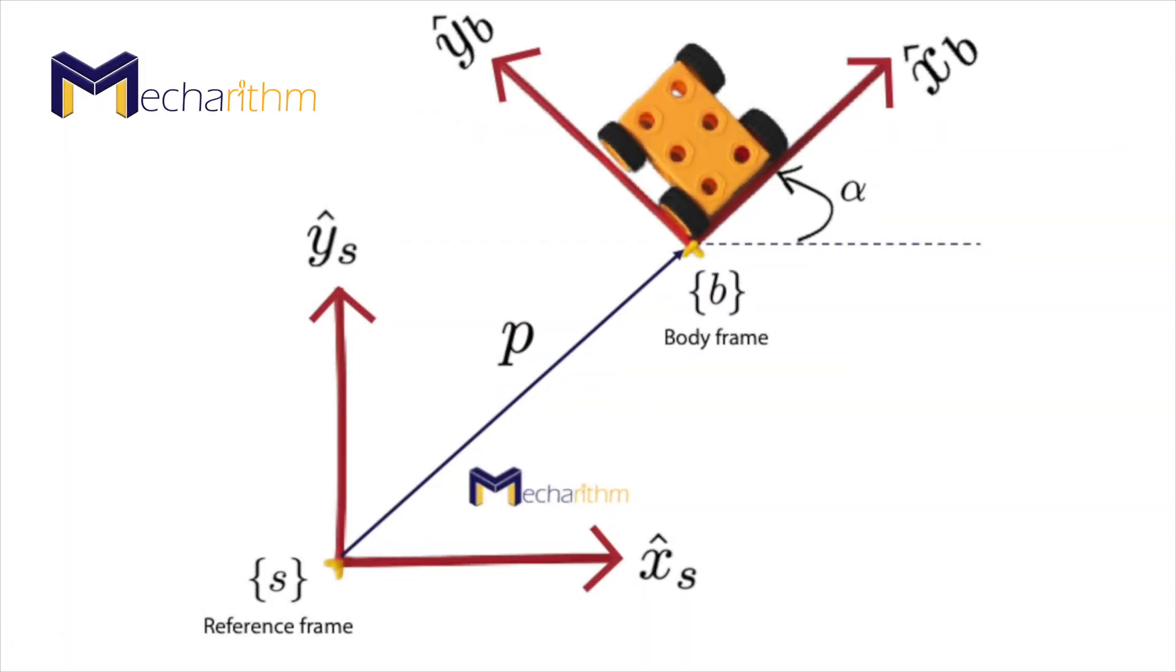Now that we found the way to represent the orientation of the toy car on the plane, it's time to represent its position. The position of the origin of the body frame and base frame coordinates can be expressed as the vector P from the origin of the S frame to the origin of the B frame.